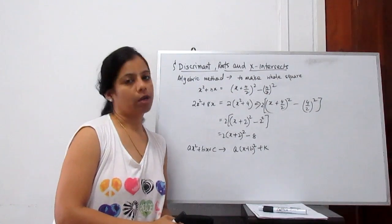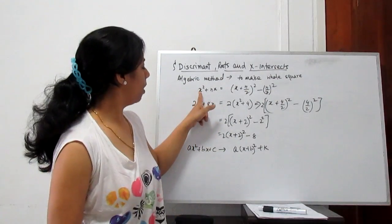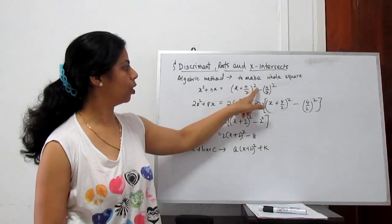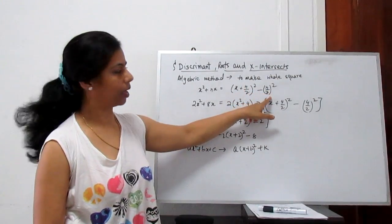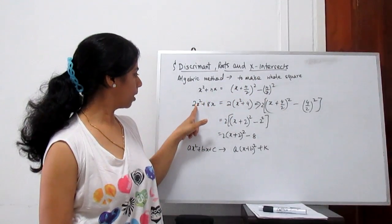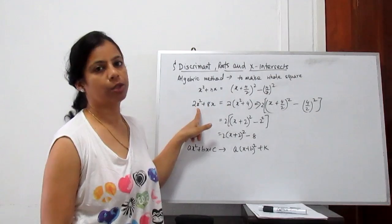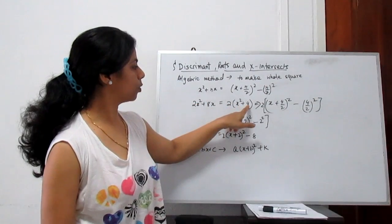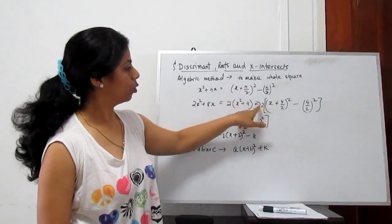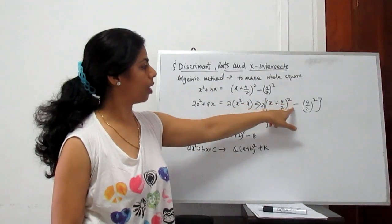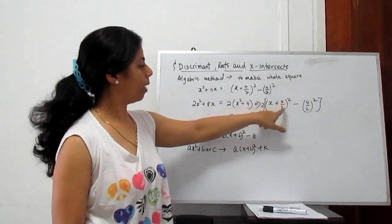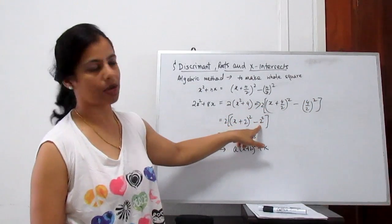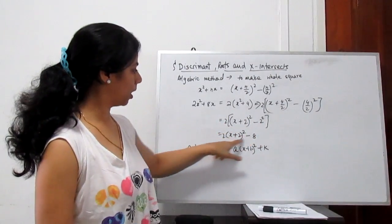What is the formula to convert to a whole square? If we have the equation x² + nx, its whole square form is (x + n/2)² minus that same term squared. For example, with 2x² + 8x: first take out the common factor 2, giving 2(x² + 4x). Following the formula, we get 2[(x + 2)² − 2²], which is 2[(x + 2)² − 4], giving 8.